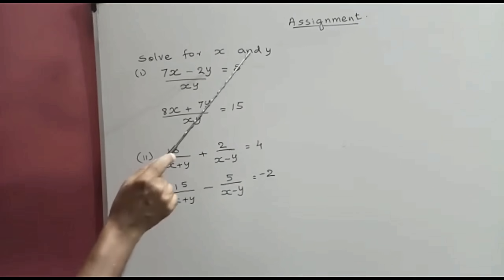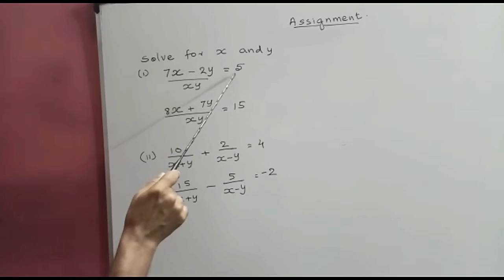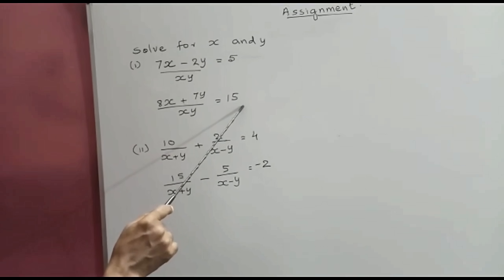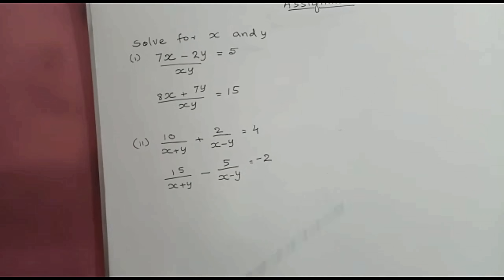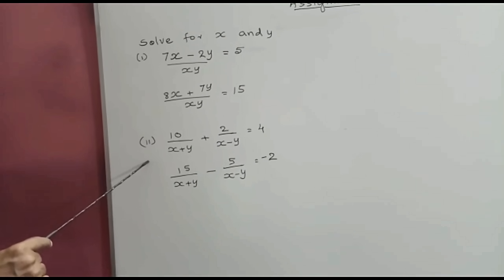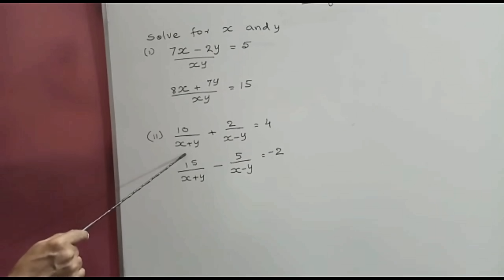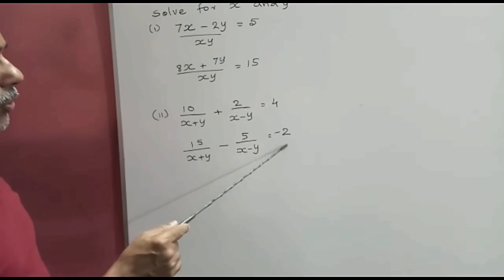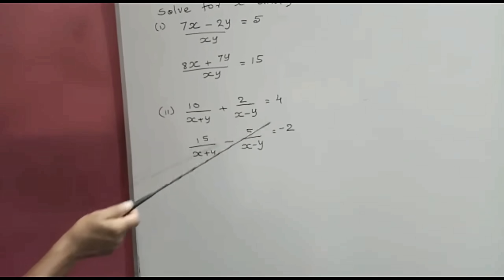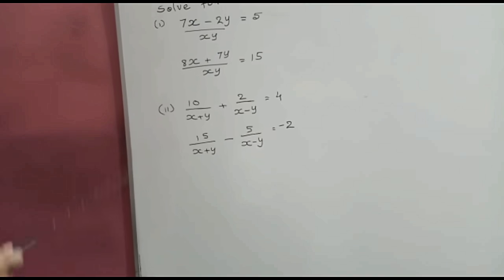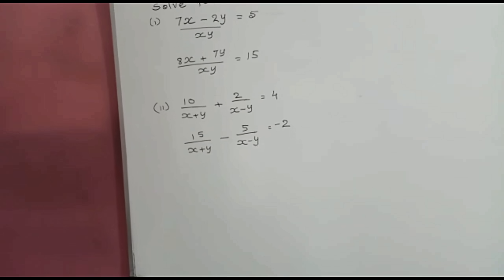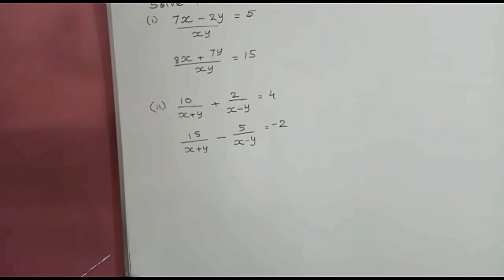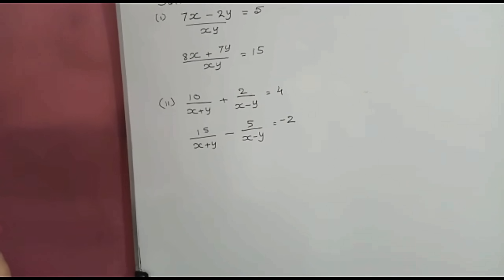Assignment: Solve for x and y. The equations given are: minus 2y upon xy equals something for the first equation, and for the second equation: 8x plus 7y plus 2x minus y equals 4, and 15 upon x plus y minus 2. Observe these equations, find out the repeating terms, replace the repeating terms by m and n to get linear equations in two variables, solve the equations in m and n, and then replace back to find x and y. Thank you.